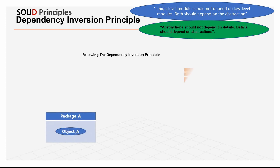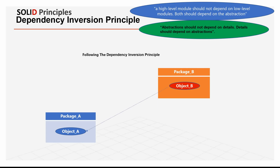We have packet A, object A, object B, and object B references object A. Now we want to change this program following the Dependency Inversion Principle. That means we have to make an interface, and now packet A inherits from the interface, and packet B references the interface.